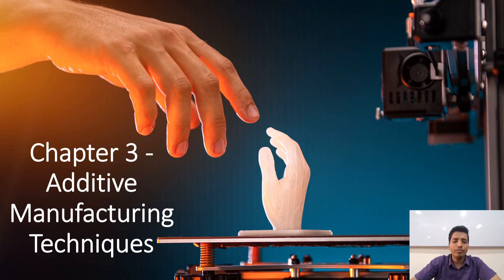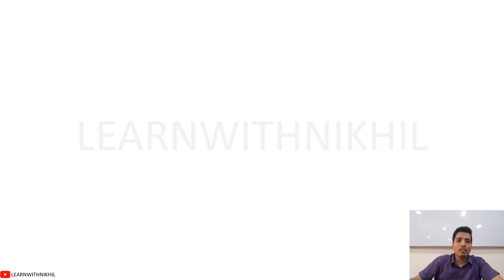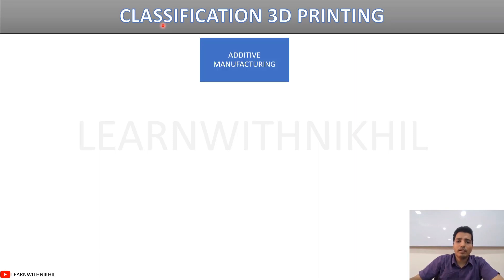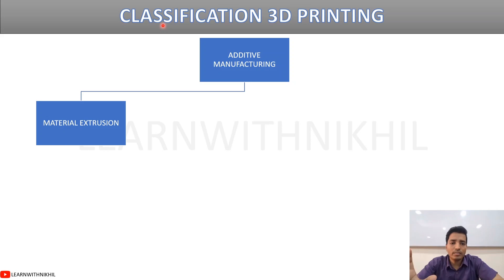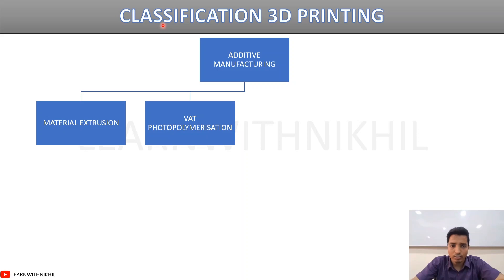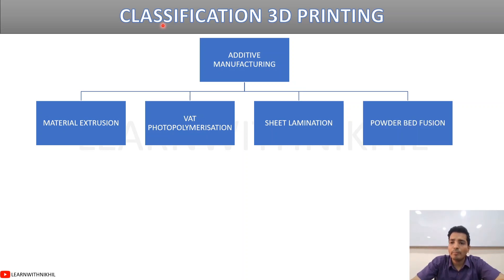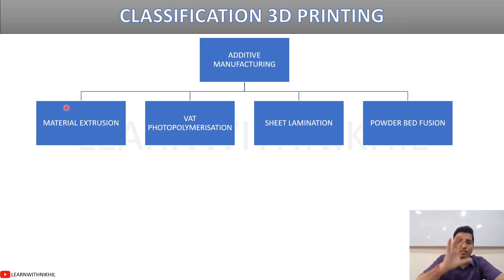Welcome back to the channel. In this video, we are going to study different types of 3D printers under the chapter on additive manufacturing techniques. The broad classification of 3D printing includes four categories: material extrusion, vat photopolymerization, sheet lamination, and powder bed fusion. These are the four main categories, and within each there are further sub-types.